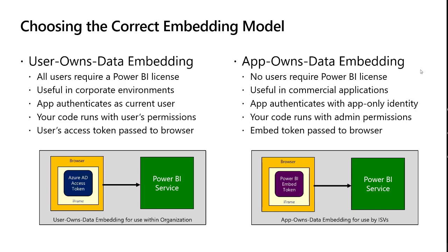The embed token is a very constrained token — typically it only gives the user the ability to see one report or one particular dashboard. The newly released version 3 of the Power BI service API now supports multiple resource embed tokens, so you can generate an embed token that gives permissions to one report and three underlying datasets. As long as the datasets all have the same schema, you can use the Power BI JavaScript API to rebind the report to dataset 1, then dataset 2, then dataset 3. A multi-resource embed token is constrained — certainly not the Azure AD access token that an attacker could use to gain admin access to an entire workspace.